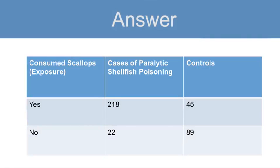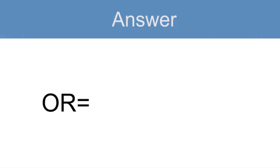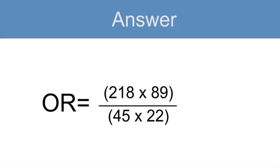This is what your table would look like. 218 cases of paralytic shellfish poisoning and 45 controls who consumed scallops, and 22 cases and 89 controls who did not consume scallops. So to calculate the odds ratio, you take the cross product, which is 218 times 89 divided by 45 times 22, and you get 19.6.